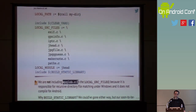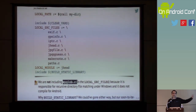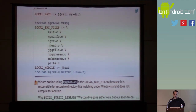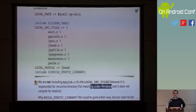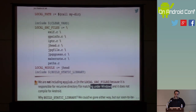One thing I did in particular is I omitted the file called mywav.c, which was in the original makefile that jhead came with. The reason is that it doesn't compile for Android — it's Windows-specific. So I just literally omitted it.